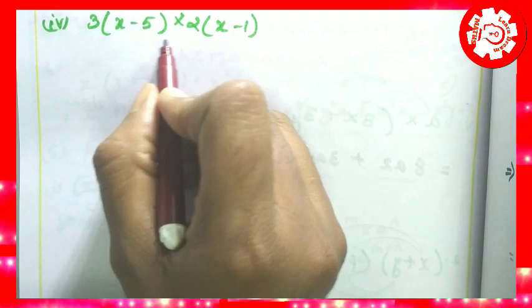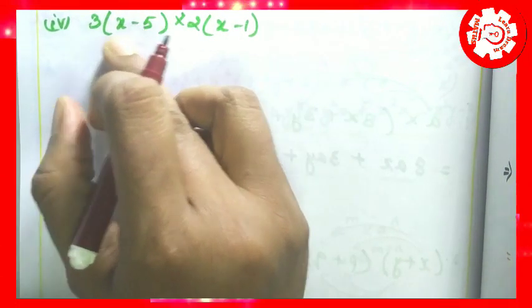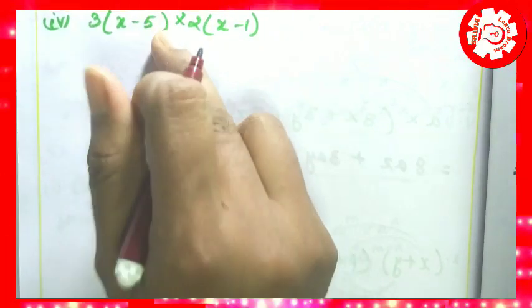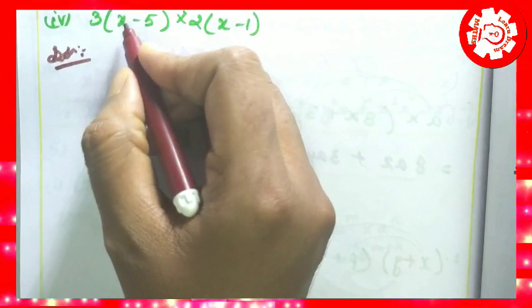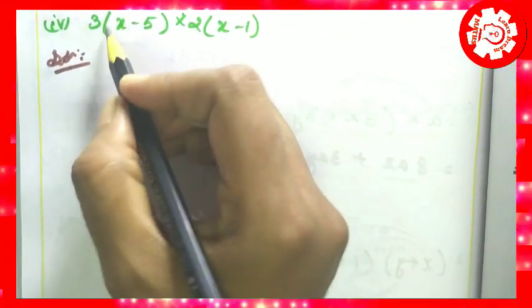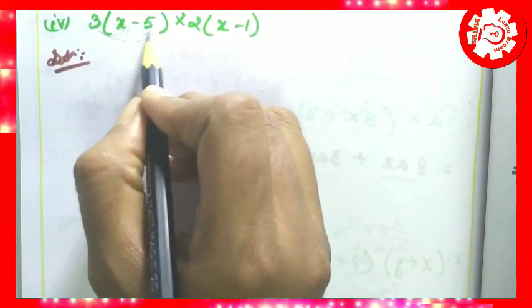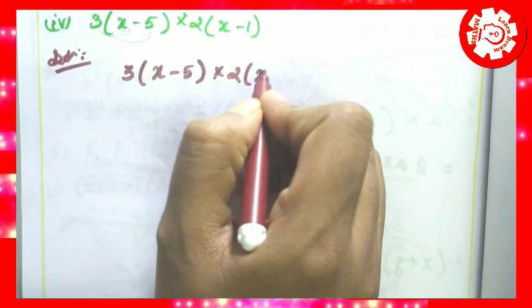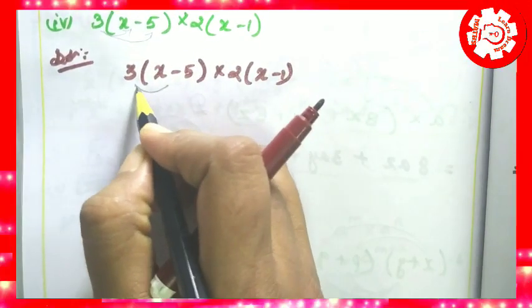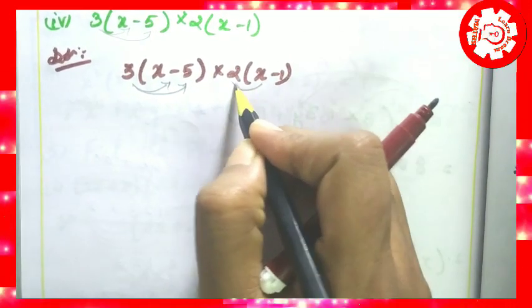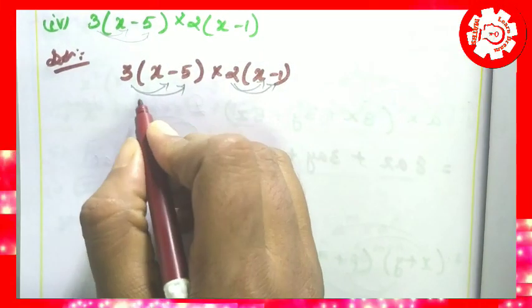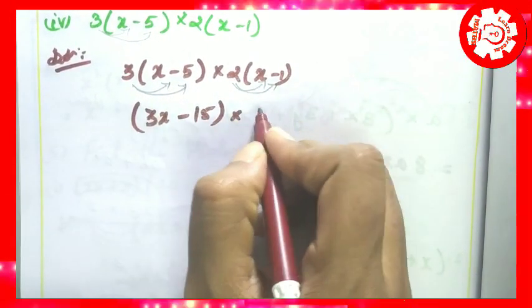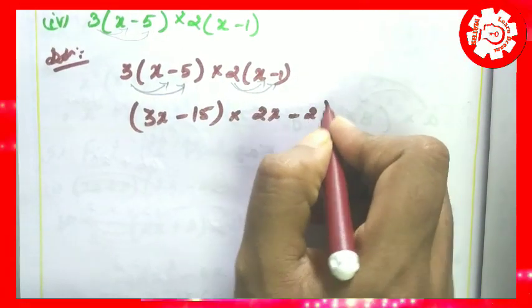Last one: 3 into x minus 5 into 2 into x minus 1. The 2 is a common factor in 2x minus 1. Distribute: multiply 3 into x minus 5 and 2 into x minus 1. 3 into x is 3x, plus into minus is minus, 3 into 5 is 15 — so 3x minus 15. 2 into x is 2x, plus into minus is minus, 2 into 1 is 2 — so 2x minus 2. These are binomials.